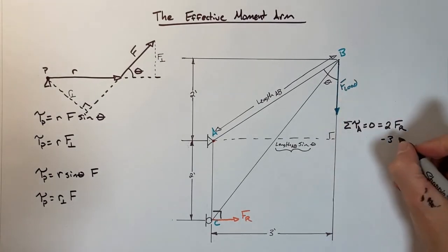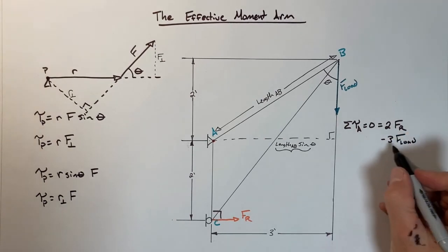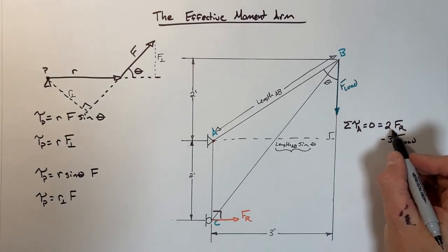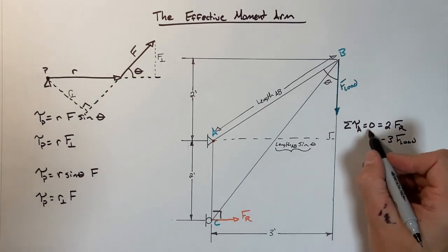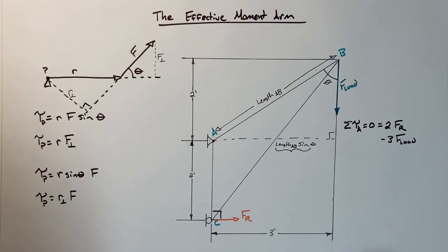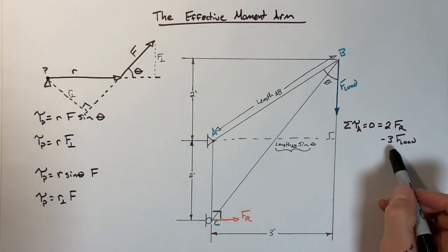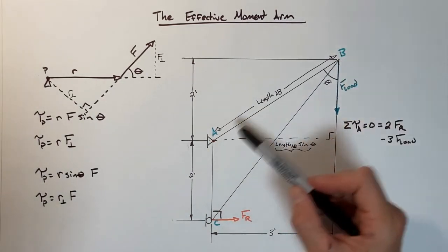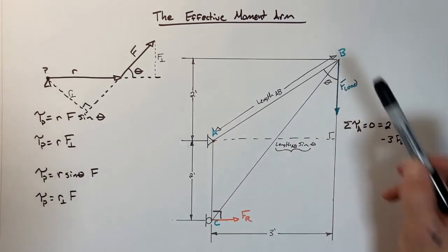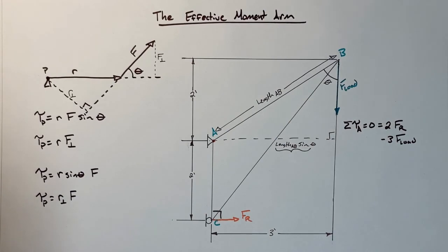Because we already know this term, the length of the beam AB times the sine of θ, is 3. We just leave it at that. So we're going to have 3 times the force by the load. This is our second torque term. So I have the torque in one direction, the opposing torque in the other direction. Those two values have to add up to zero. If we knew the magnitude of the load, we could easily solve for the reaction force.